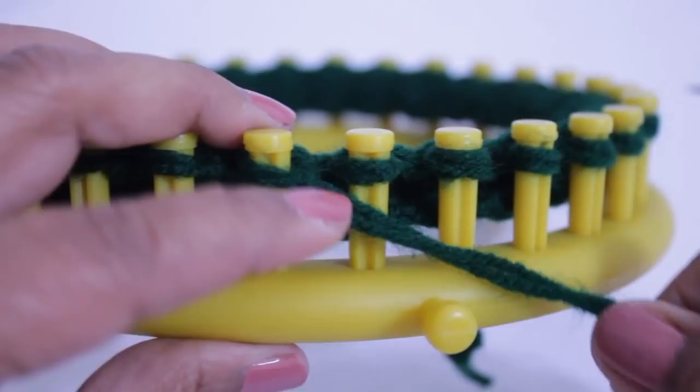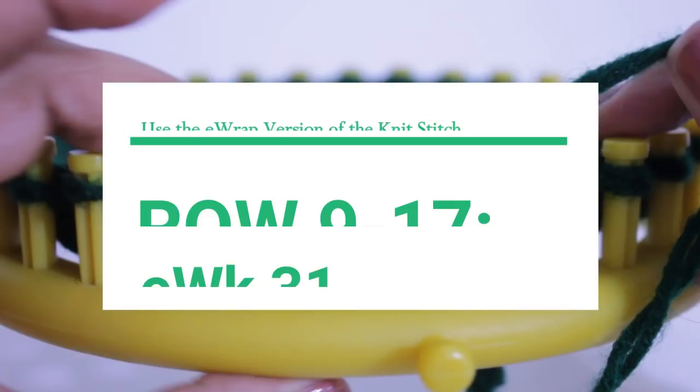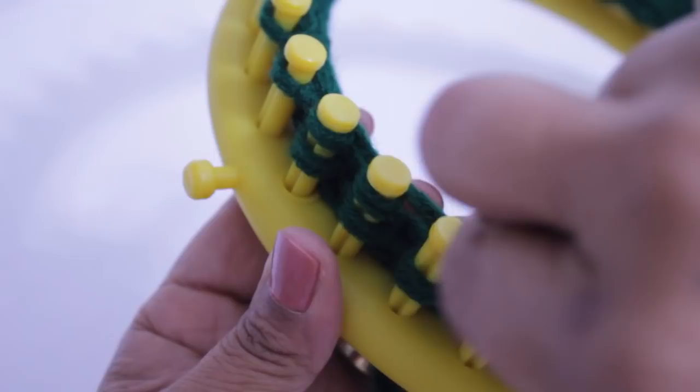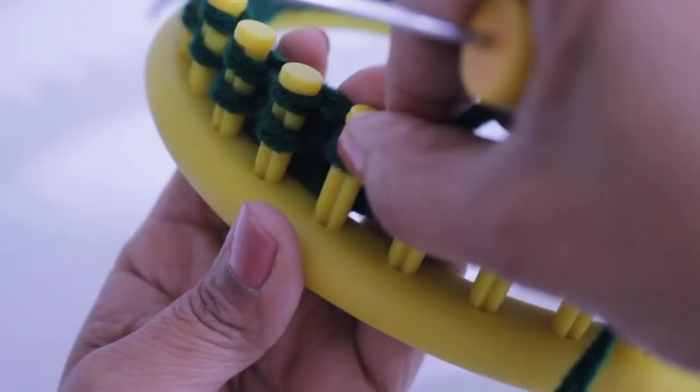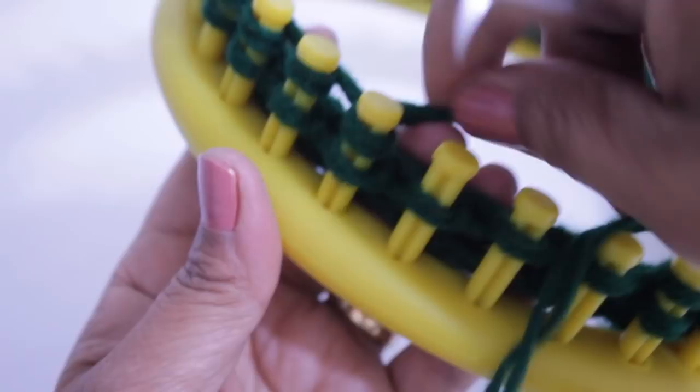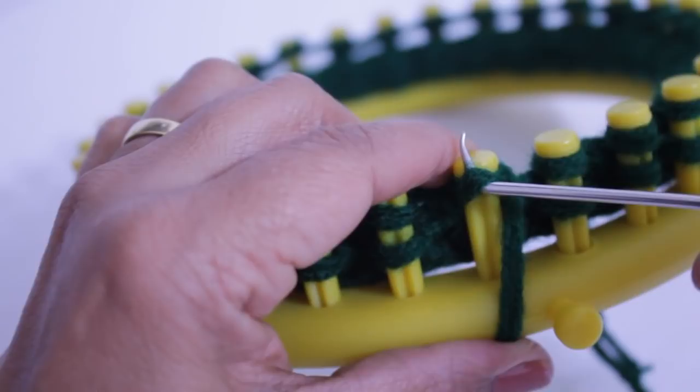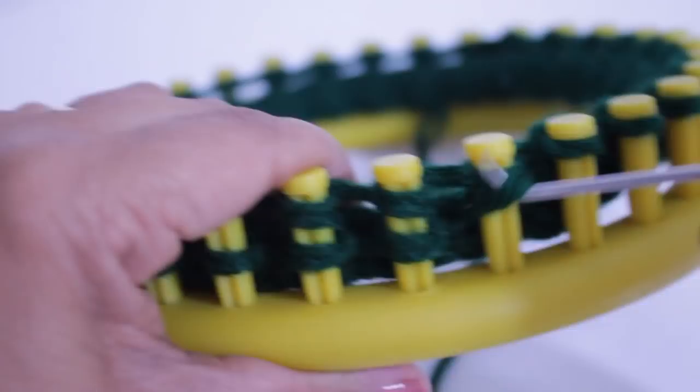Once you're done knitting that one row of the purl stitch, you're ready for rows nine through 17, where you'll be doing a new version of the knit stitch. It's called the E-Wrap Knit Stitch. You're gonna take your working yarn and you're gonna wrap all of your pegs. Now some people like to wrap a few of them and then knit off. That's okay as well. When I reach peg 31, it will be the last peg that I wrap and the first peg that I knit off. This secures my yarn so that if for some reason it gets loose, it won't all unravel.